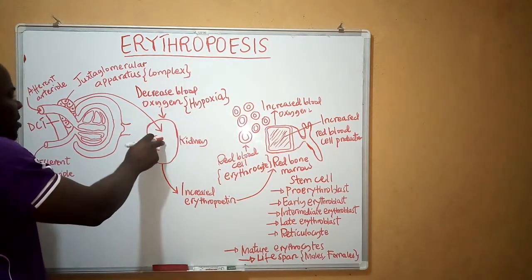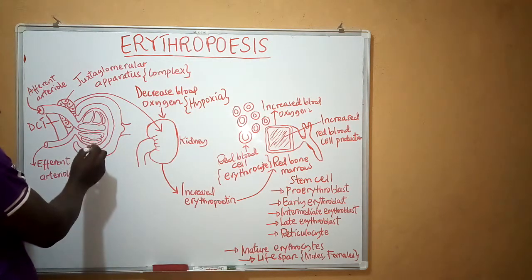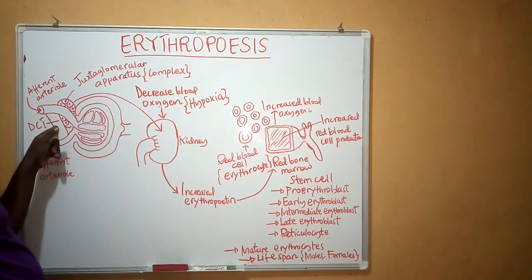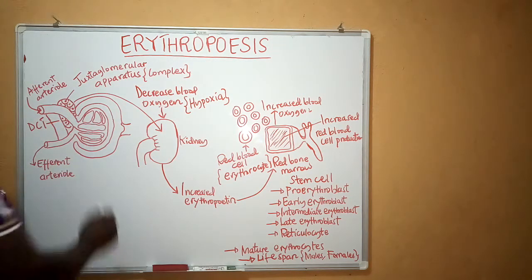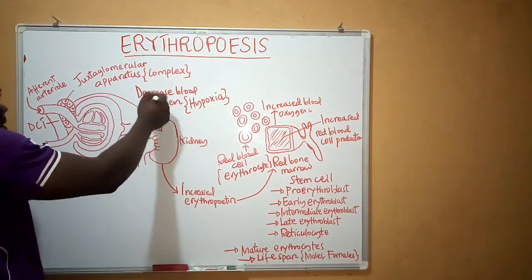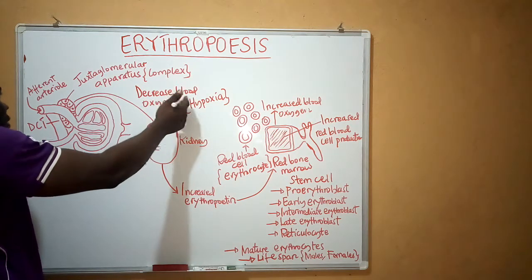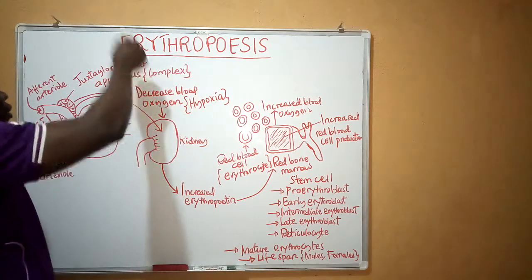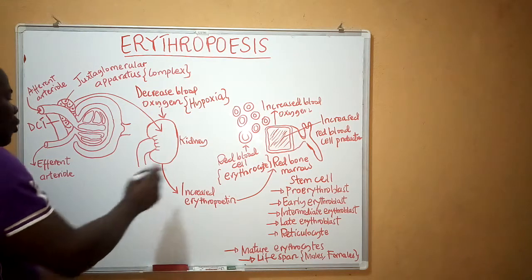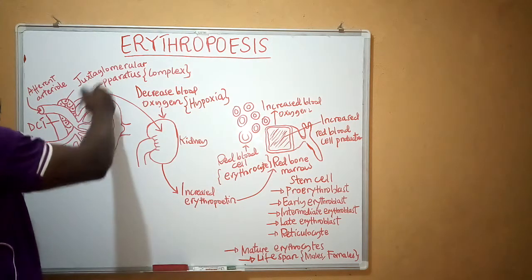Once there is a low concentration of oxygen at the juxtaglomerular apparatus or juxtaglomerular complex — situated between Bowman's capsule and the distal convoluted tubule — the cells here include macula densa cells and juxtaglomerular cells. In the case of hypoxia, the juxtaglomerular cells are going to secrete what is called erythrogenin.